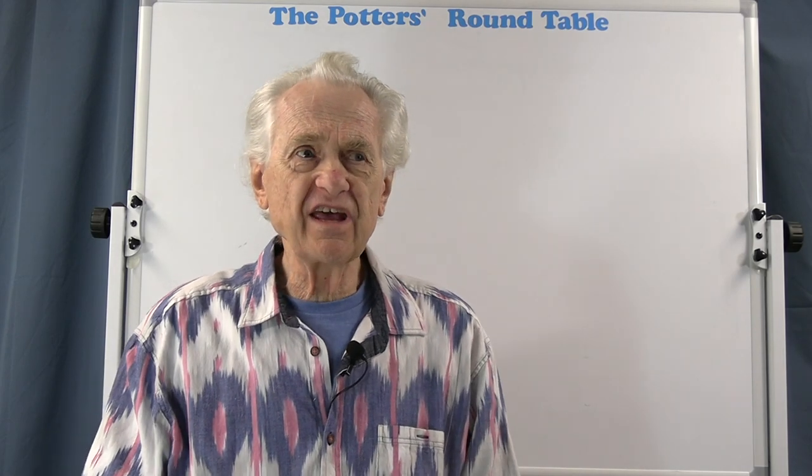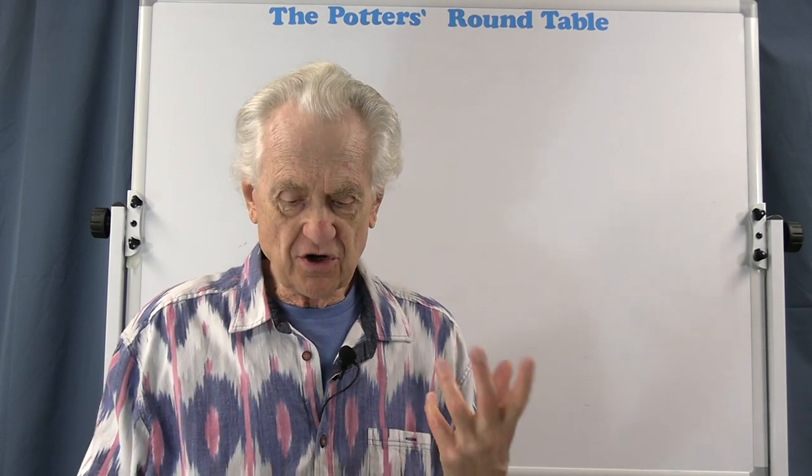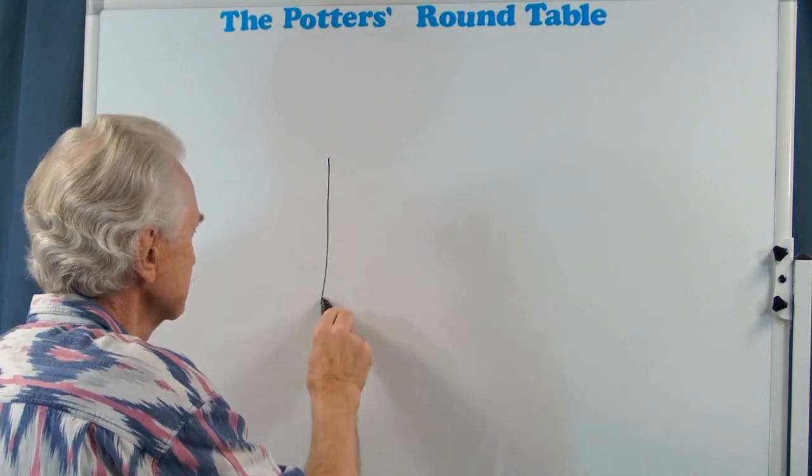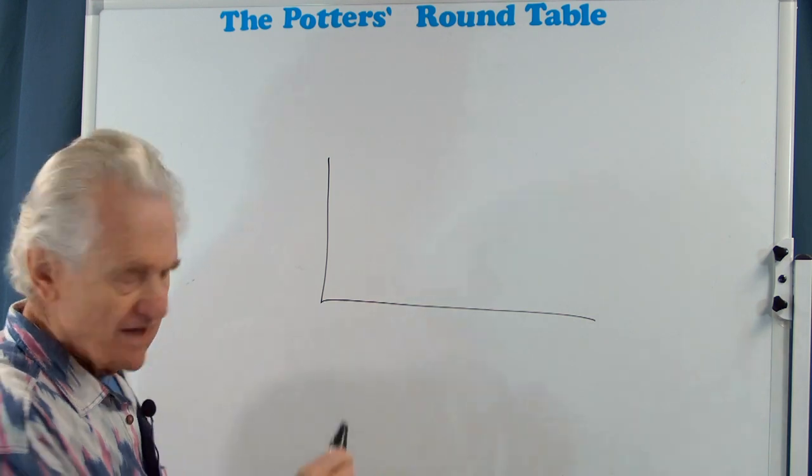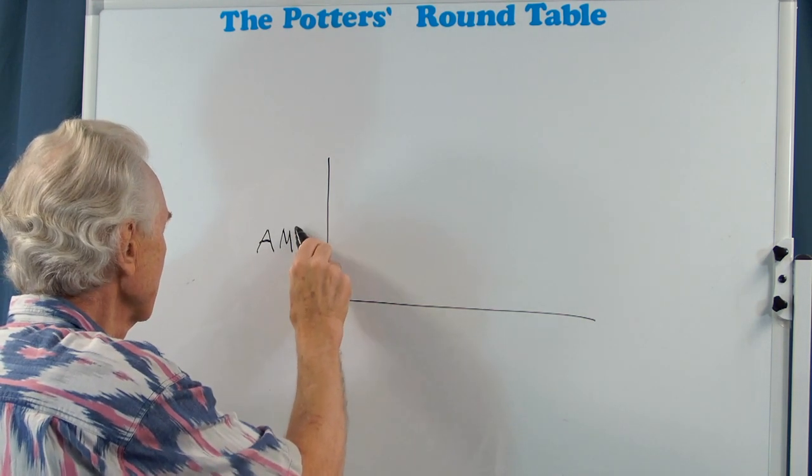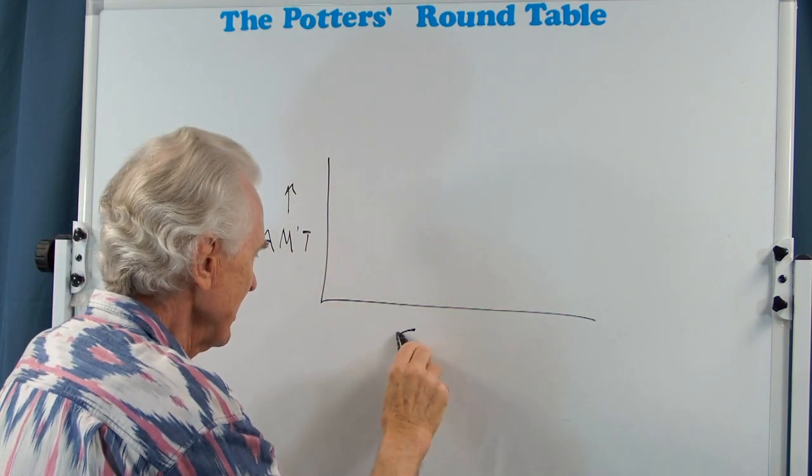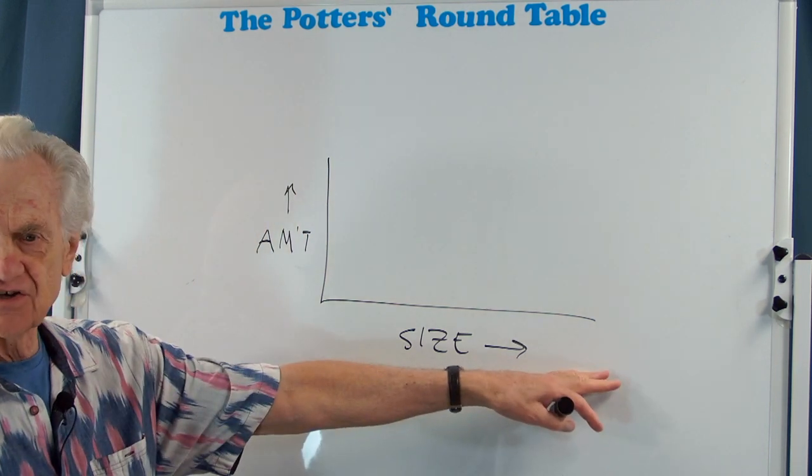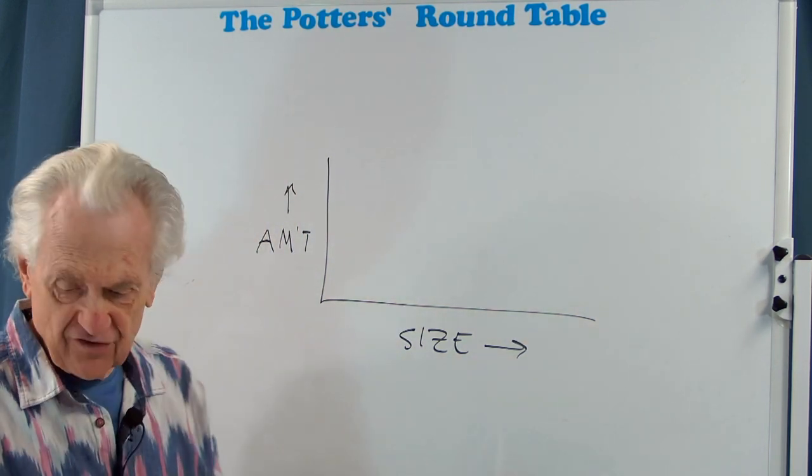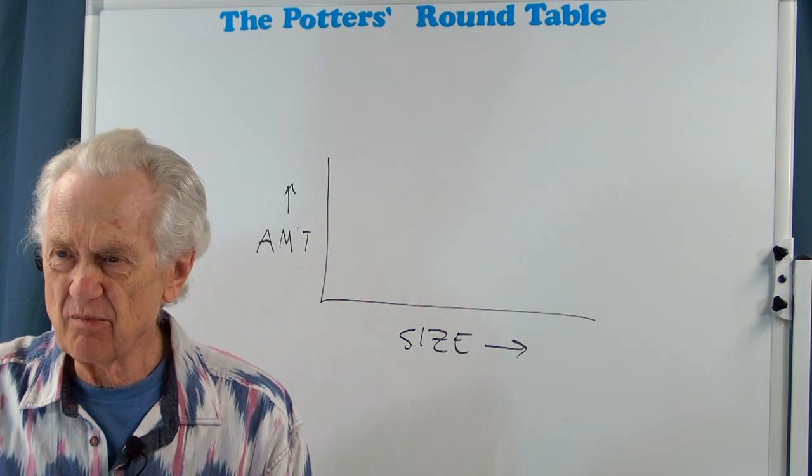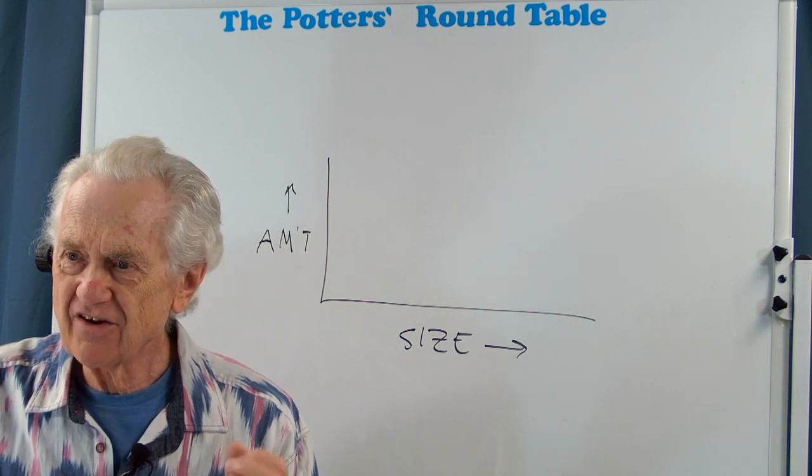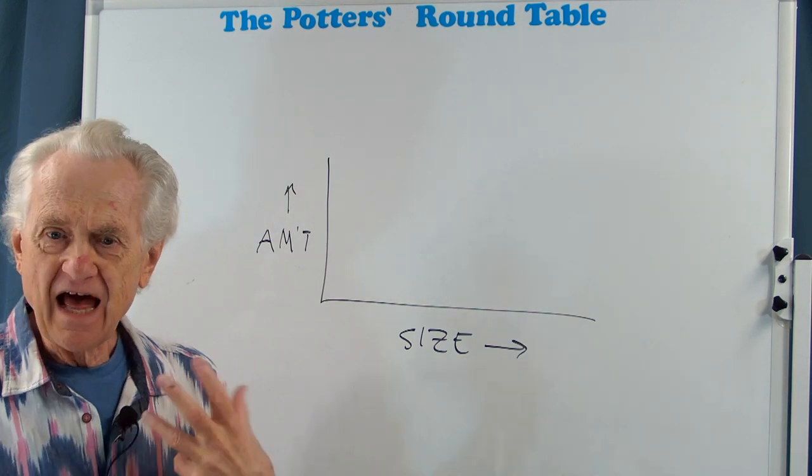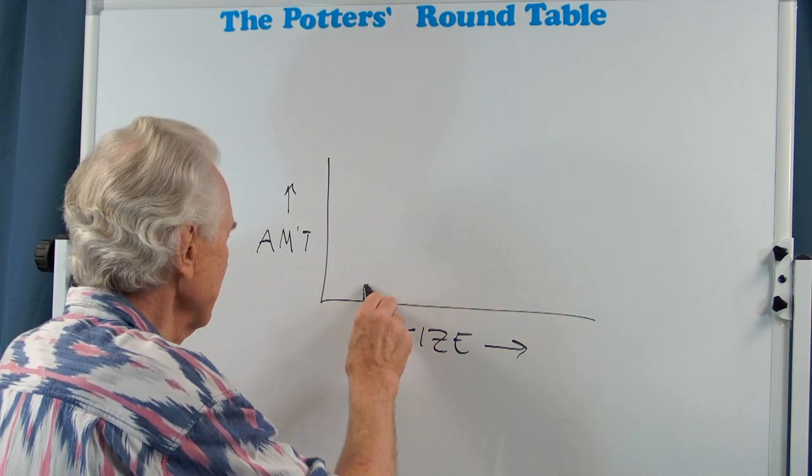So a PSD or Particle Size Distribution can be shown, the easiest way to think about it is as a graph. So I can draw a graph that shows the amount and the size. And so the size is increasing as you go to the right, and the amount is increasing. So what you can imagine is if I had, let's say, a handful of pebbles, and I decided I'm going to look at all the pebbles and count how many of each size I have, I could plot up the results in the form of a graph that looks something like this.